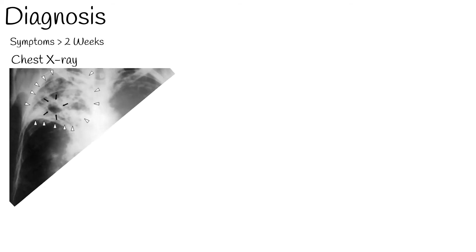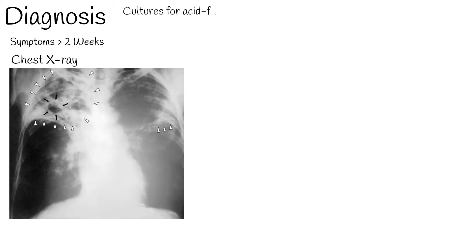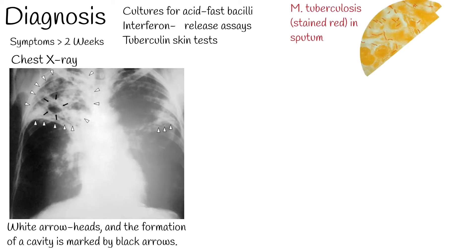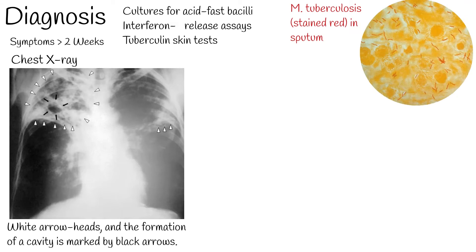Diagnosis: Symptoms lasting more than two weeks should raise concern. A chest x-ray and multiple sputum cultures for acid-fast bacilli are typically part of the initial evaluation. Interferon gamma-release assays and tuberculin skin tests are of little use in most of the developing world. A definitive diagnosis of TB is made by identifying M. tuberculosis in a clinical sample such as sputum, pus, or a tissue biopsy.